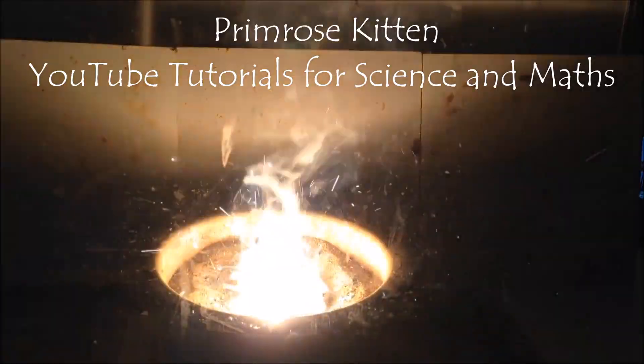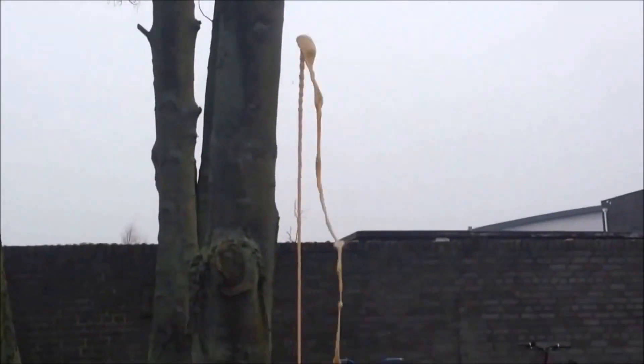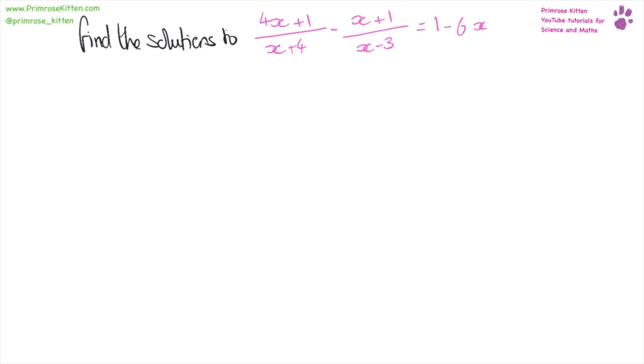Sometimes the examiners will give you a clue to the answer in the question. That's what I've done in this one, but can you pick up on the clue as to how to solve it? Here we have four x plus one over x plus four minus x plus one over x minus three equals one plus two x. I want you to find solutions to this, and there's a little clue that it is solutions here.